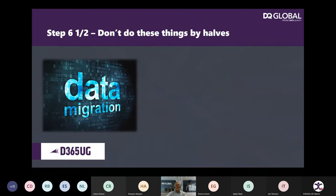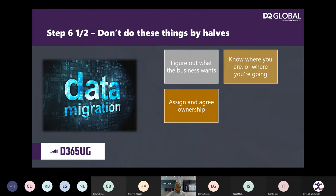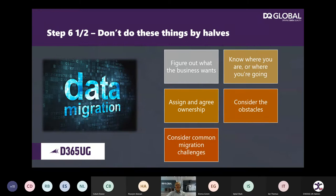So those were our six steps. What is the six and a half step? Well, it's really: don't do these things by halves. You must figure out what the business wants. You must know where you're going. You must assign and agree ownership. You must consider the obstacles. You need to consider the common data migration challenges. And you need to use tools. That leads us on to a discussion around some tools before we go and have a demo.